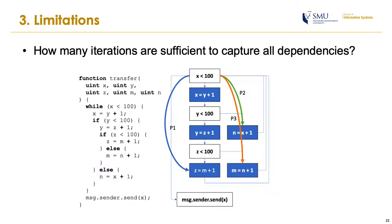When enumerating all possible traces of a smart contract, we must answer: how many iterations are sufficient to capture all dependencies in a loop? Given the example in the slide, we can prove that with five iterations, ESGARC is able to capture all dependencies in the transfer function, because there are five assignment statements in the loop. However, for complicated programs, ESGARC may take a very long time to enumerate all possible traces due to path explosion. This problem will be addressed in future work.